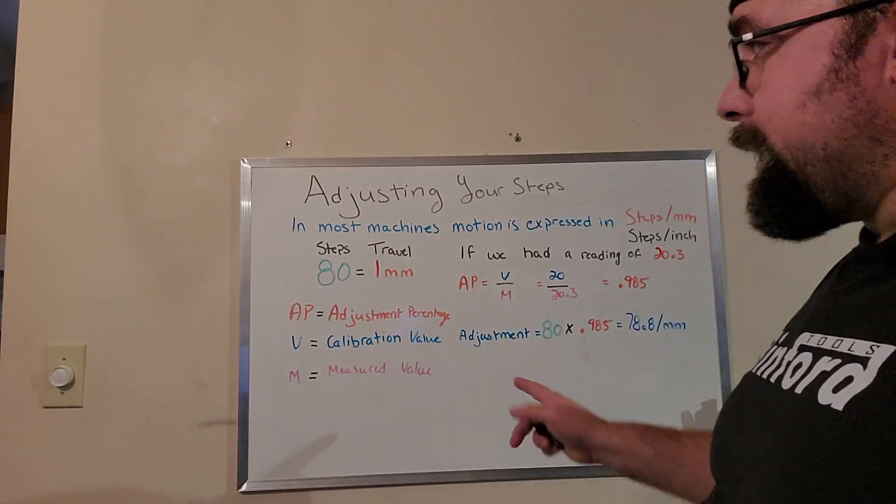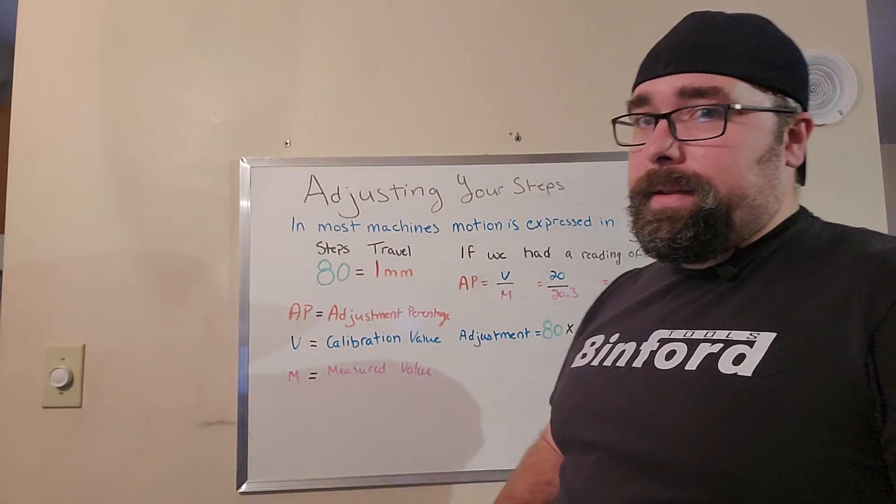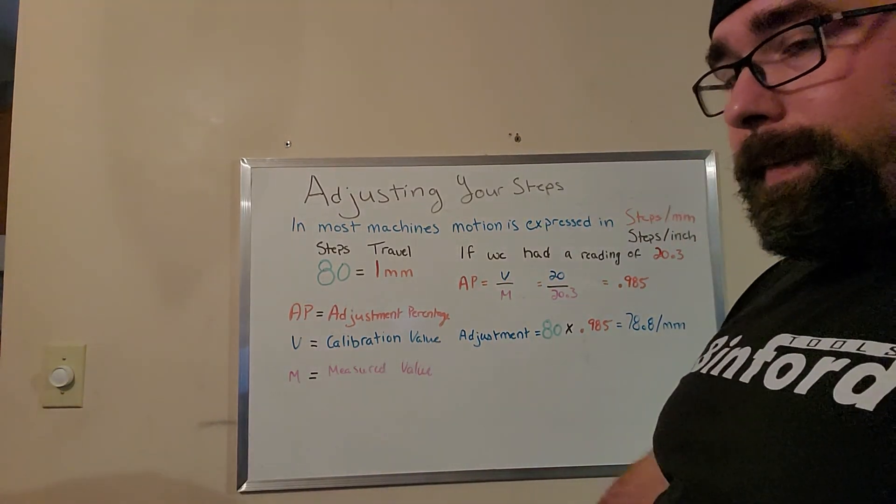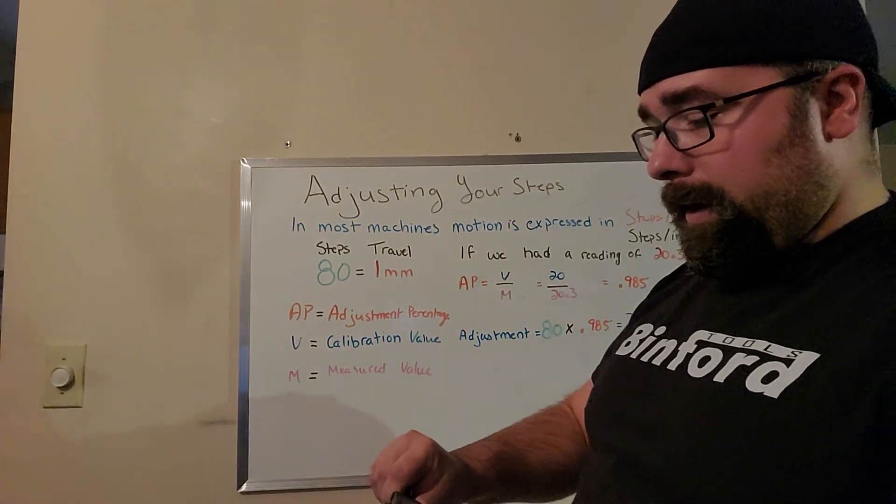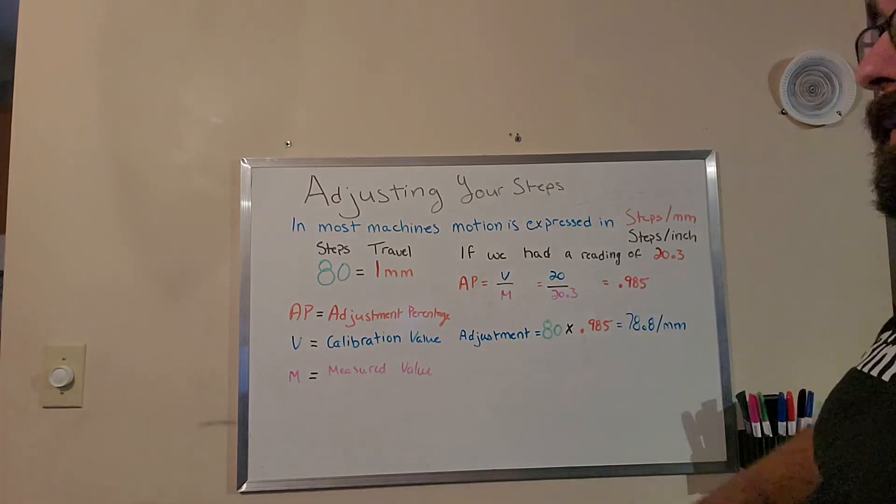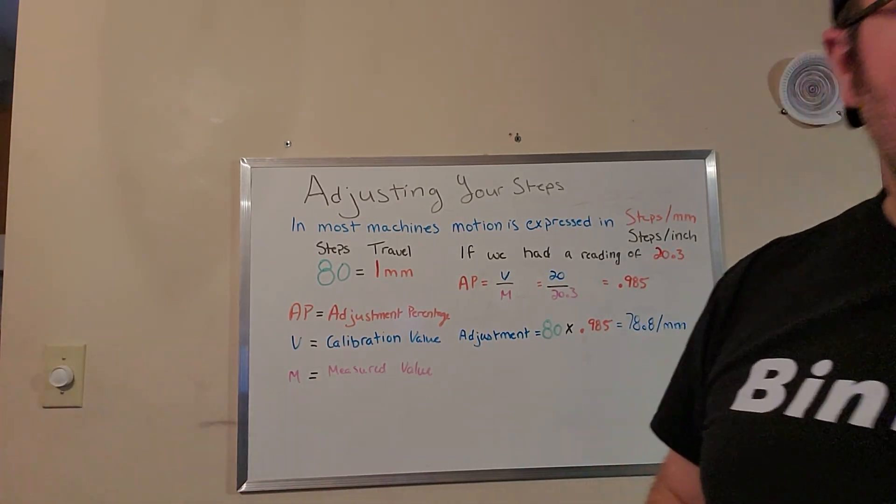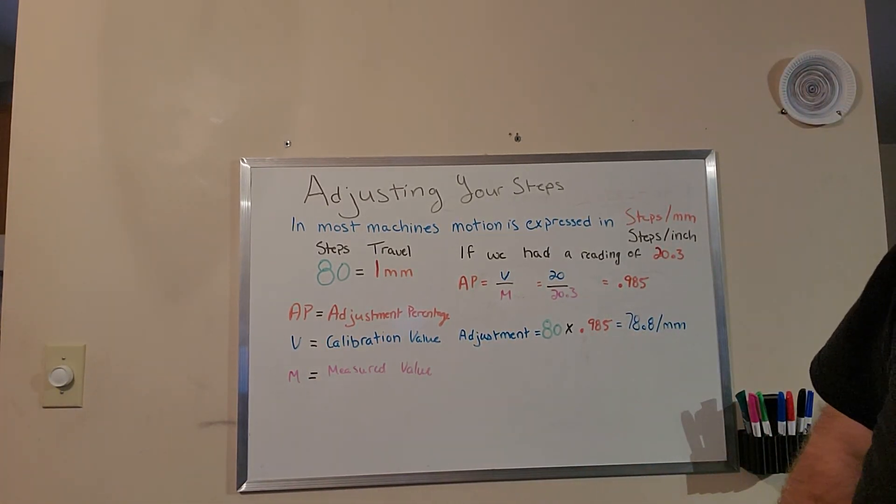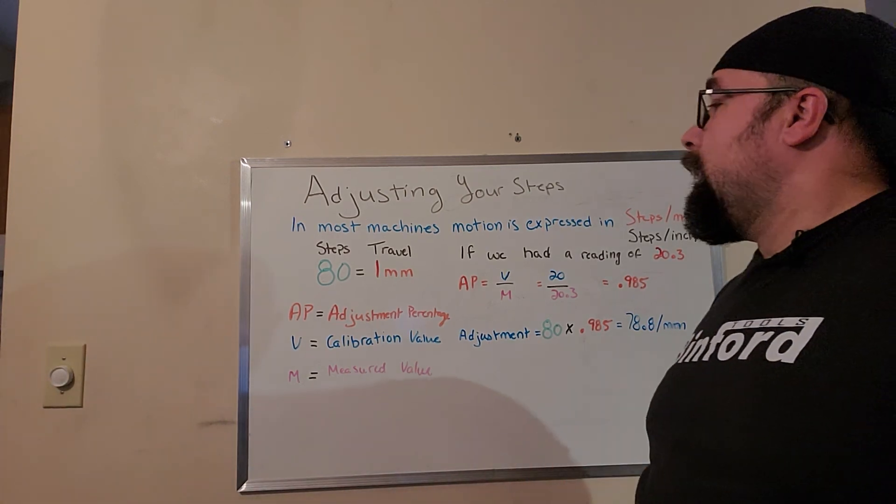So now that we covered how to measure the steps, let's talk about adjusting your steps. So first, I'm going to take a handy dandy measurement of this one here. And I had a value of 20.3. So that's over our plus or minus 0.2 millimeter tolerance.